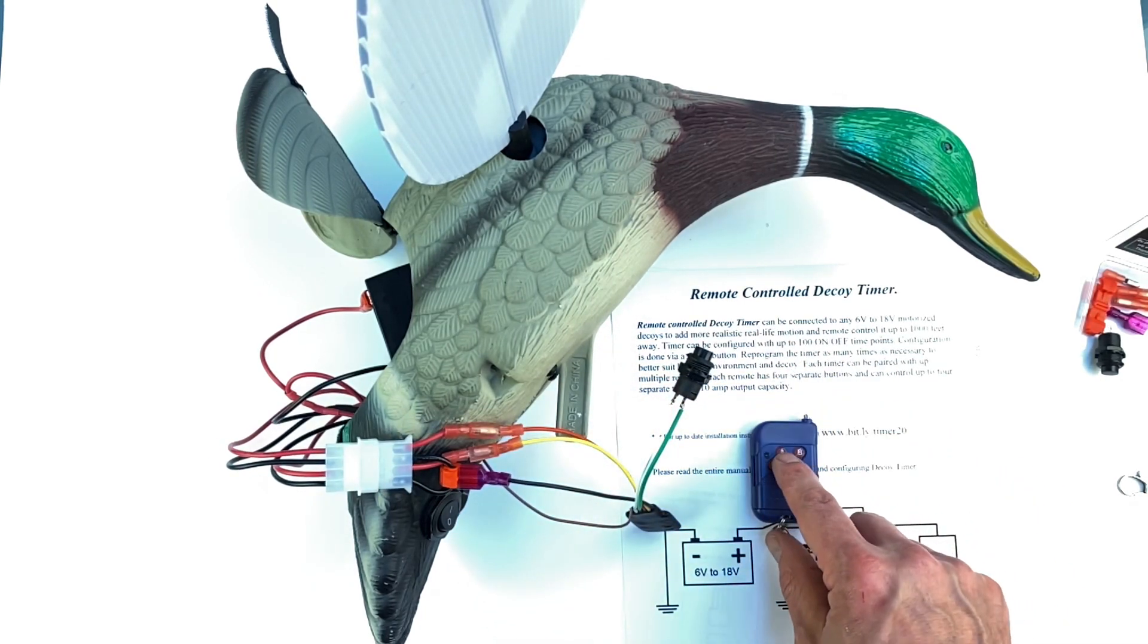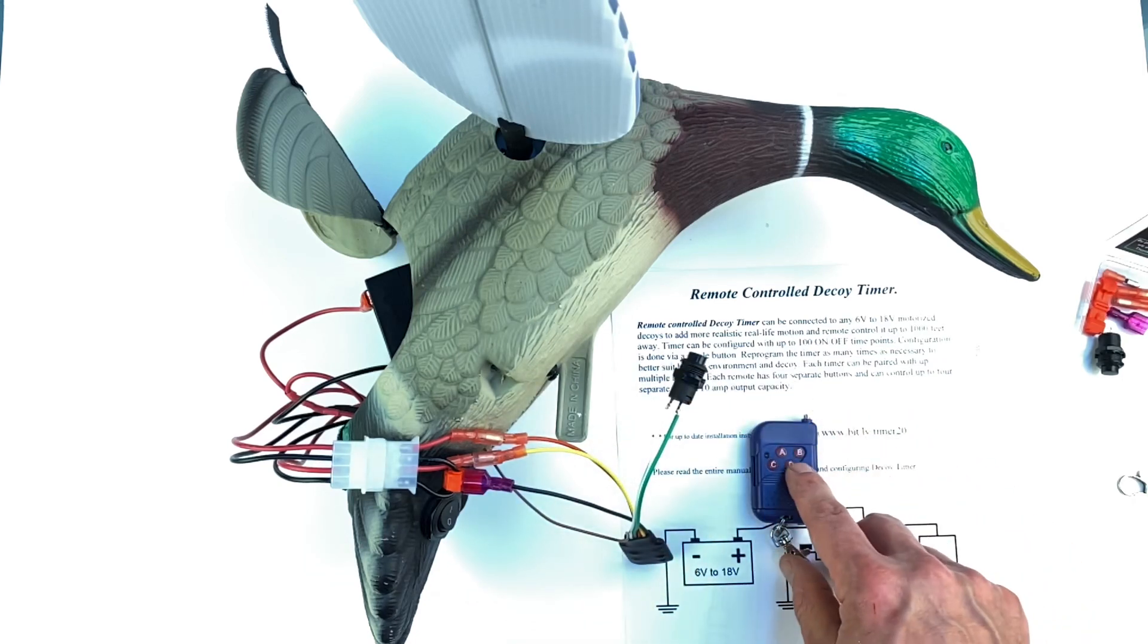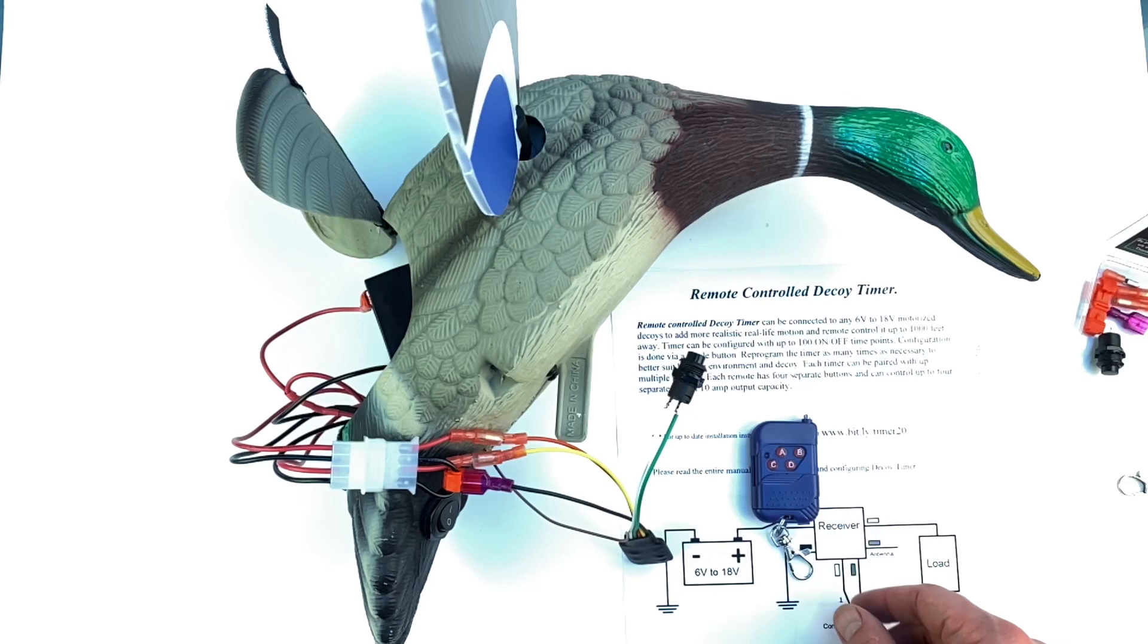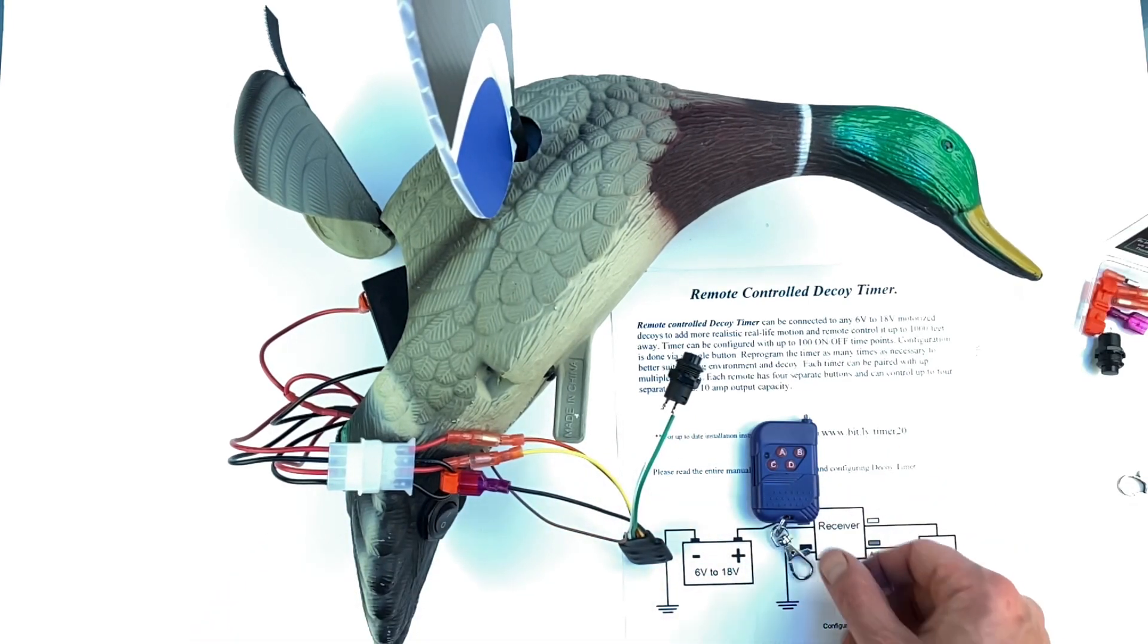Now when we push button A on the remote, it pairs with the receiver and you will see the motion. You can pair other buttons as well, and you turn it off. So this is how we pair the remote.